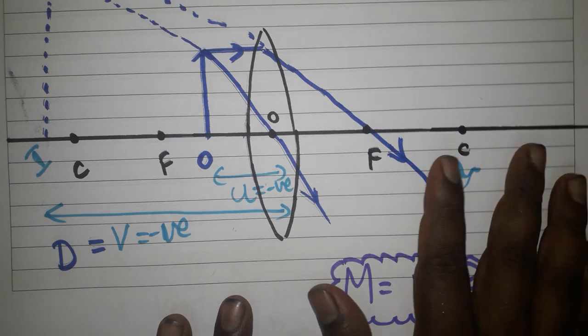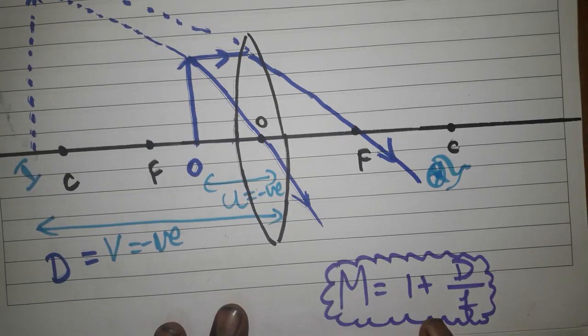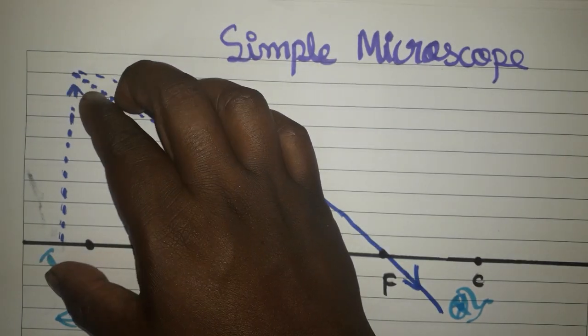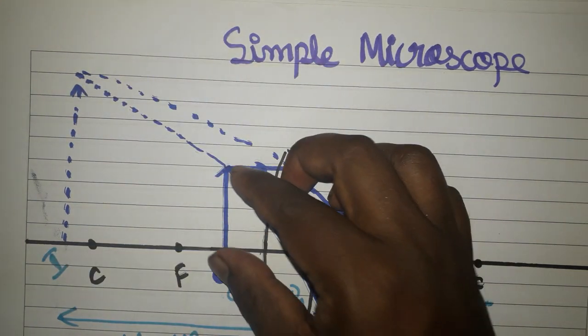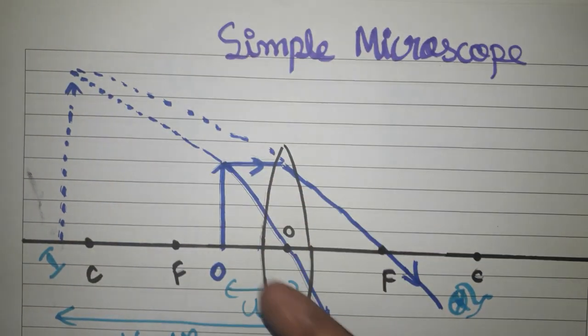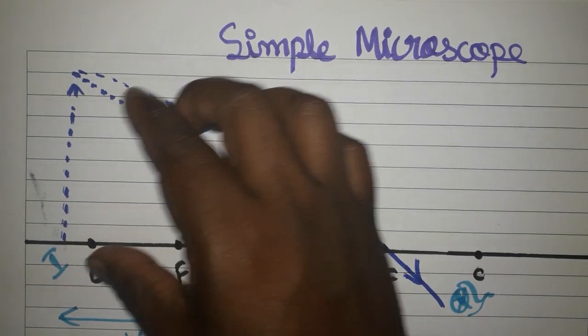Next, we are going to derive the magnification formula. Before that, we have to know what is the image characterization. It is upright, virtual, erect, and magnified compared to the object size. The image is bigger, upright, and magnified.